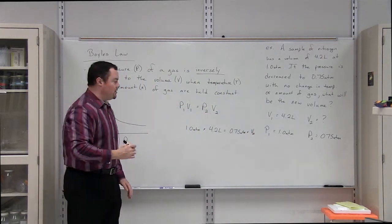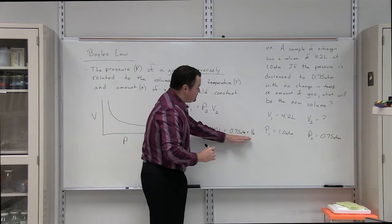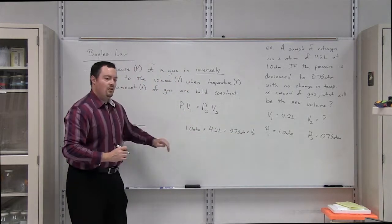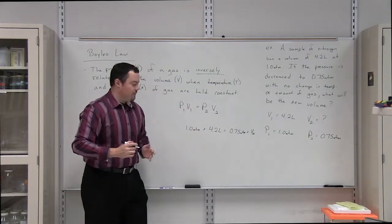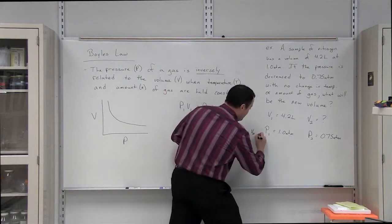In order to solve for V2, we need to get this pressure value on the left side of the equal sign. In order to do that, we use algebra and we just multiply by the inverse.